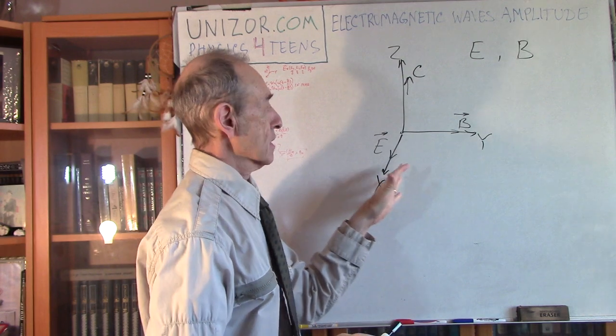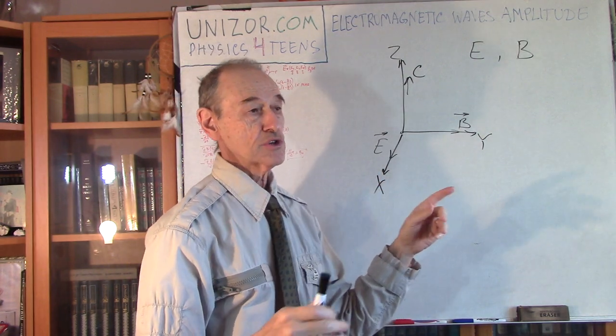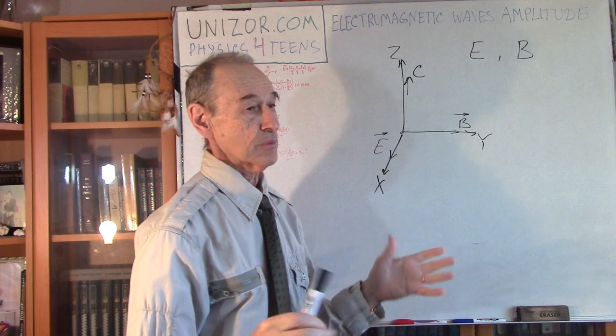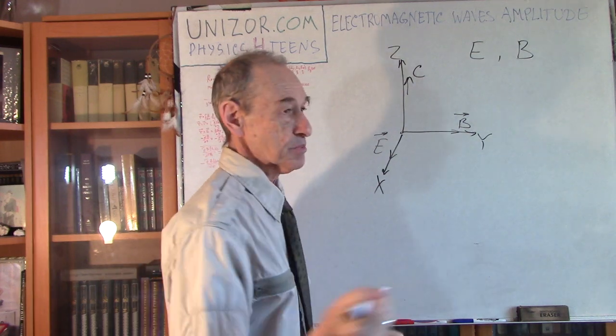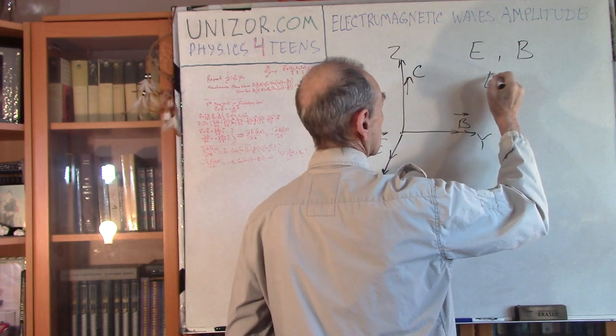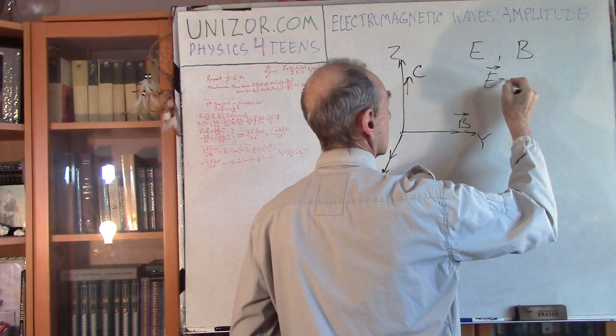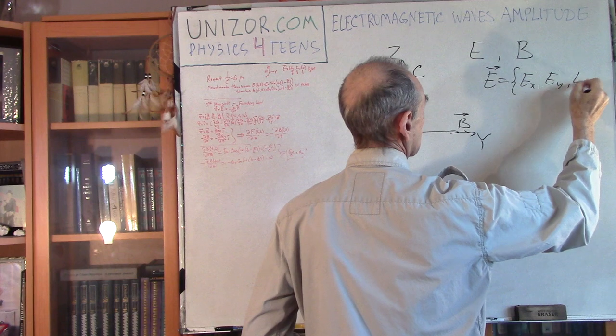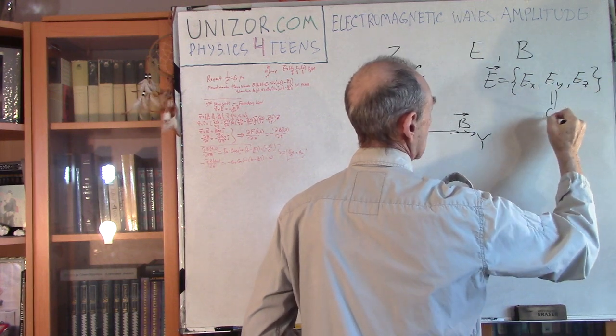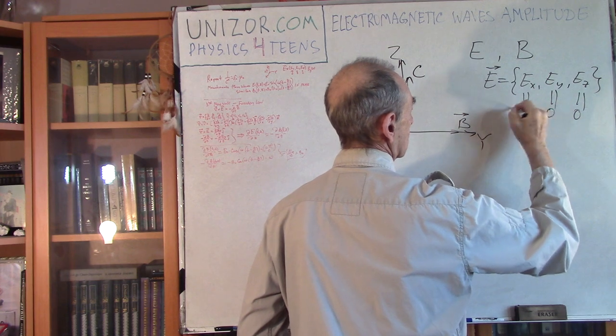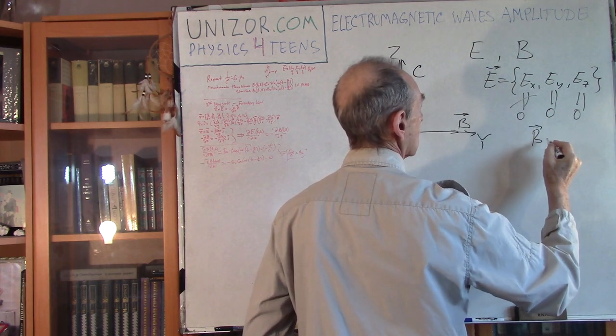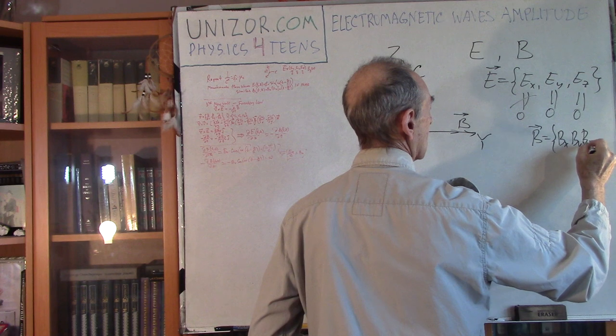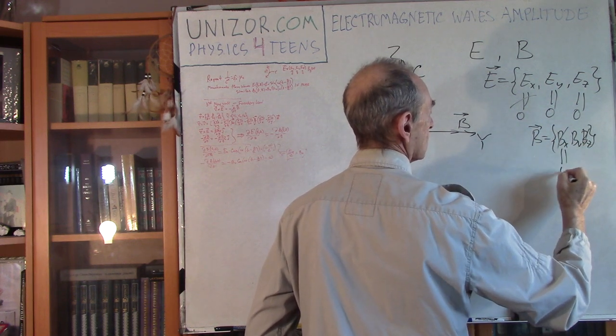I assume that the result of Maxwell equations in this simplest case can be expressed analytically. Vector E has three components: Ex, Ey, and Ez. But Ey and Ez are equal to zero; only Ex is not zero. Same with vector B: it has three components Bx, By, and Bz. Bx and Bz are equal to zero, and only By is not zero.